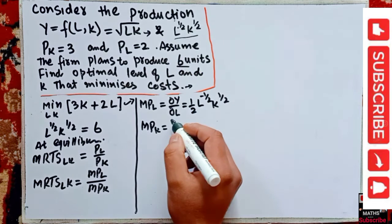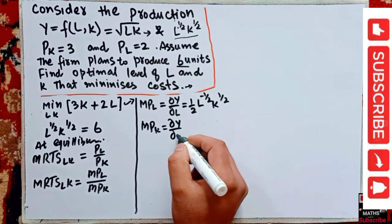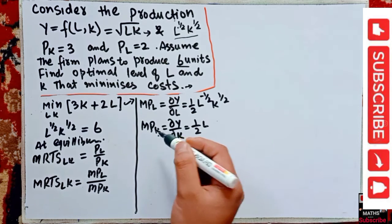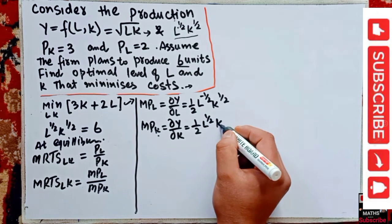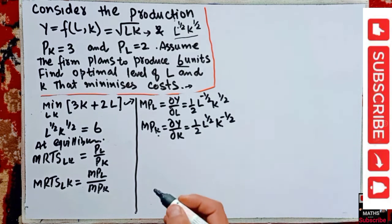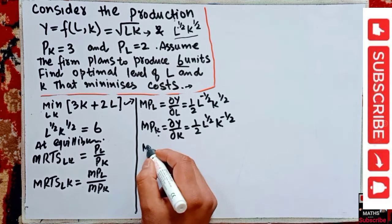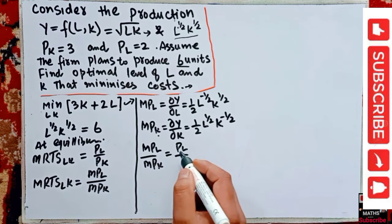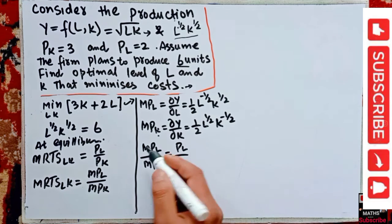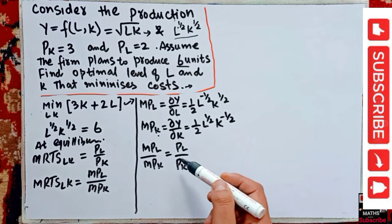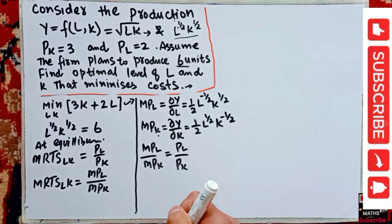So the tangency condition is: marginal productivity of labor divided by marginal productivity of capital should equal the ratio of the input prices, PL divided by PK. This is the tangency between the isoquant and the isocost line — the ratio of marginal productivities of labor and capital should equal the ratio of the prices of labor and capital.